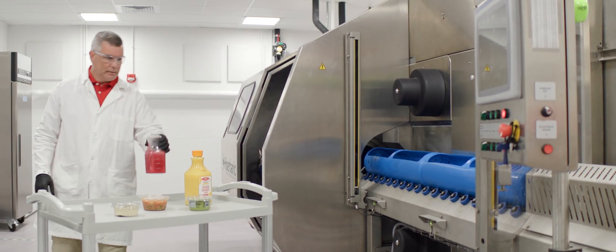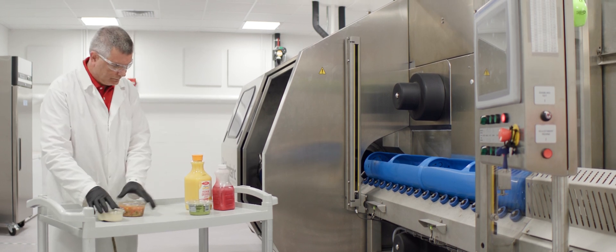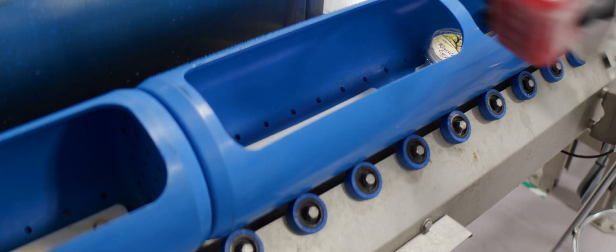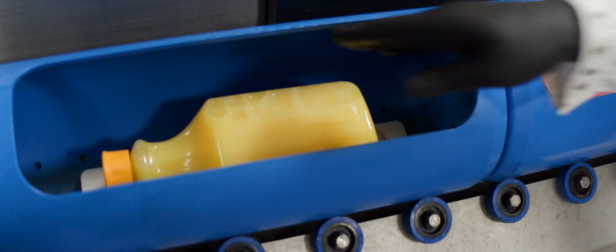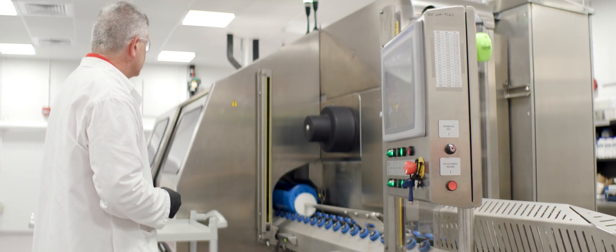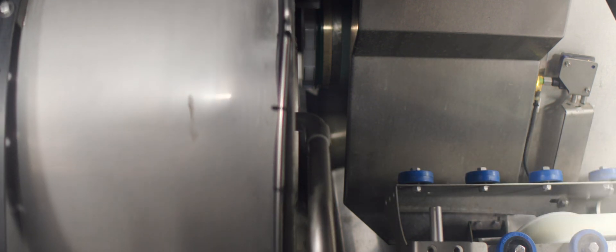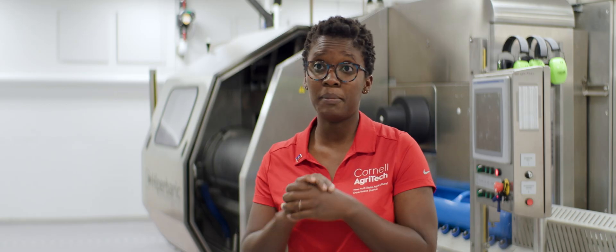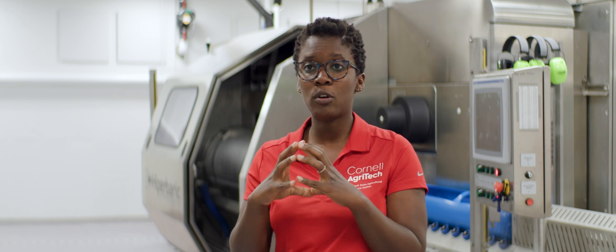Typically, a manufacturer would prepare their food and put it in a final container, and it goes into a carrier that takes the food product into the pressure chamber. There, the pressure chamber is filled with water, and then pressure is applied in all directions of the food, and that's why the food doesn't crush, right? Because the pressure is uniformly applied.